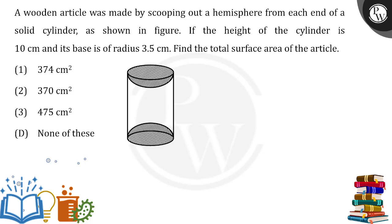A wooden article was made by scooping out a hemisphere from each end of a solid cylinder as shown in the figure. We have a cylinder with hemispheres removed from the top and bottom. Now understand one thing: if these hemispheres are identical, we've basically removed the volume of the same sphere. But let's read the question.